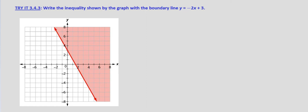Essentially, we're given that the equation of this line is y equals negative 2x plus 3. It's a solid line, so our two options are: y is greater than or equal to negative 2x plus 3, or y is less than or equal to negative 2x plus 3.